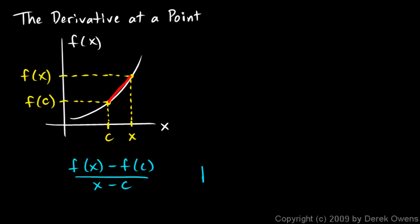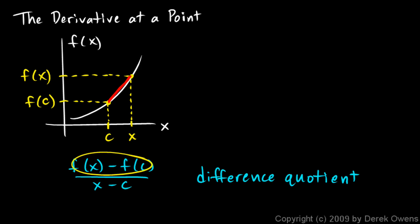An expression of this form is called a difference quotient. It should be obvious why it's called that — here we have a difference of one thing minus another in the numerator, and a difference of one thing minus another in the denominator, and we have the quotient of those two.